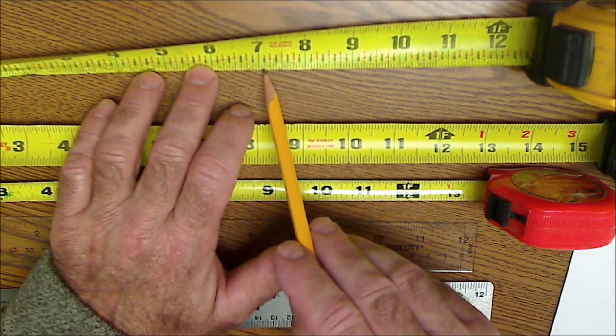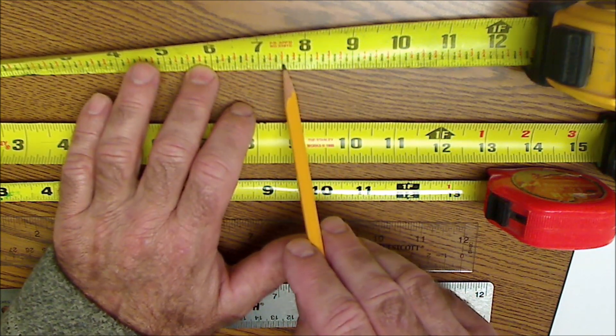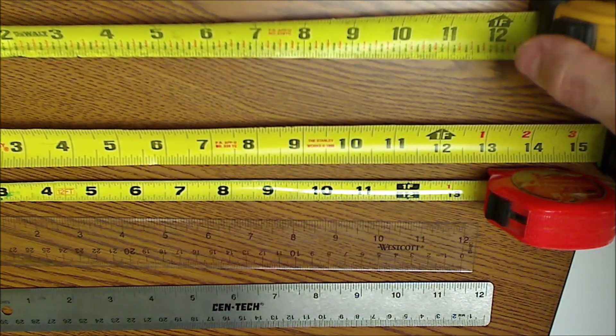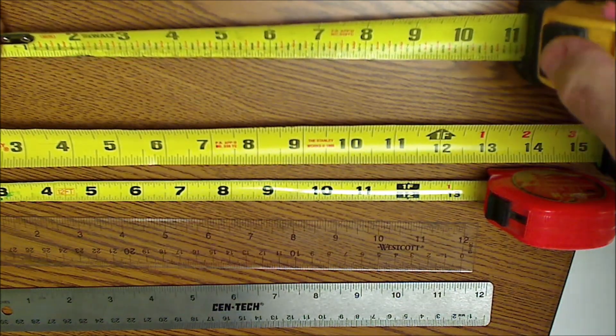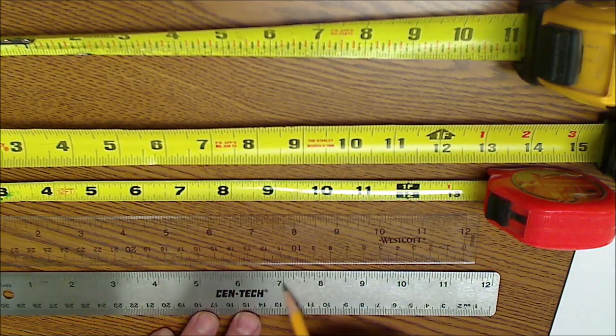This tape right here actually has them written out for you, has an eighth written out, but you need to read a tape and these don't actually work that well. The other thing I like to use too is a ruler that has clear lines or a steel ruler in the wood shop.